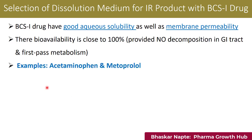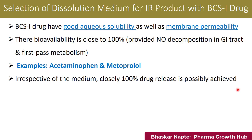These are examples of BCS Class 1. Irrespective of the medium, close to 100% drug release is possible throughout the gastrointestinal tract — starting from the gastric fluid, then intestinal fluid, all the way to the colon — and that is what makes the drug substance a BCS Class 1.